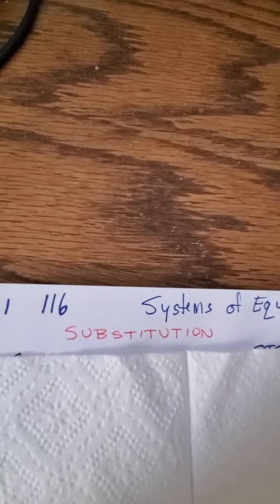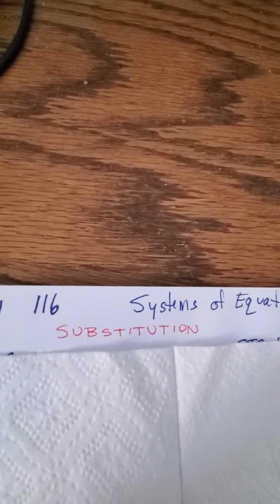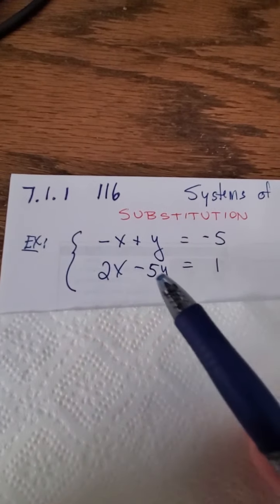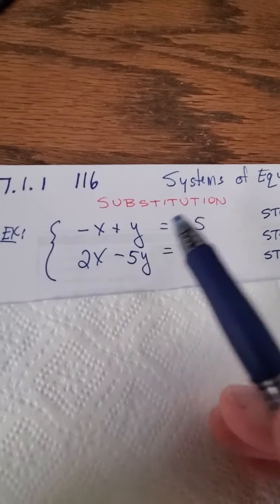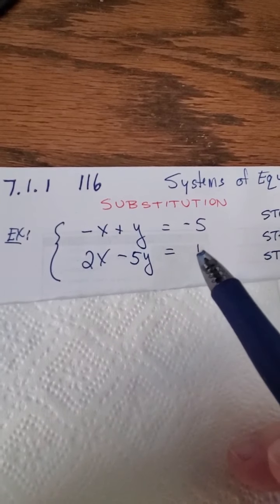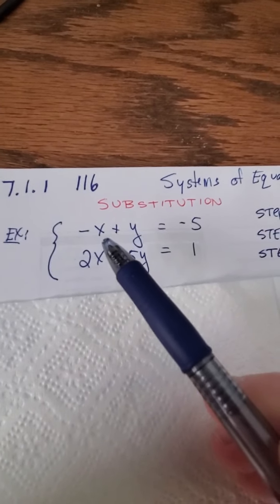Here's how it goes. First off, here's the system: negative x plus y equals negative five, two x minus five y equals one. When I say a system...